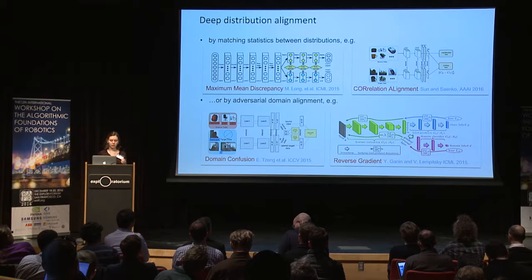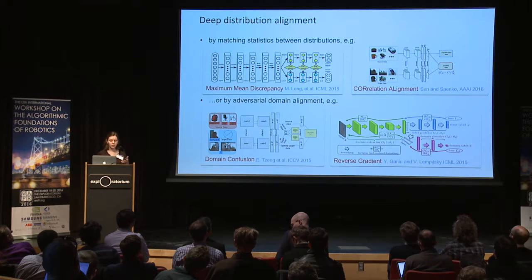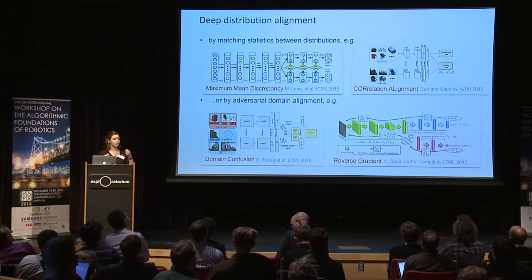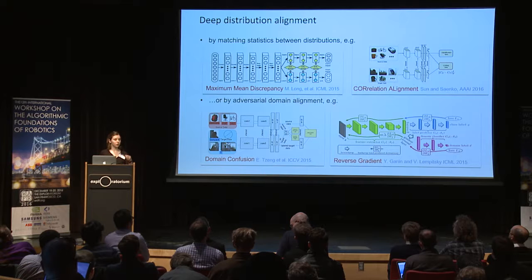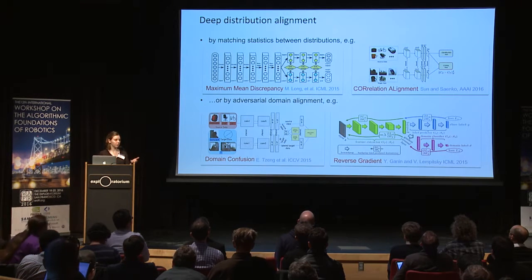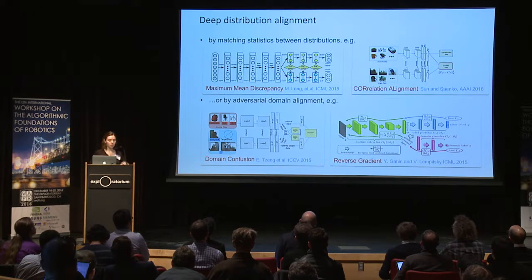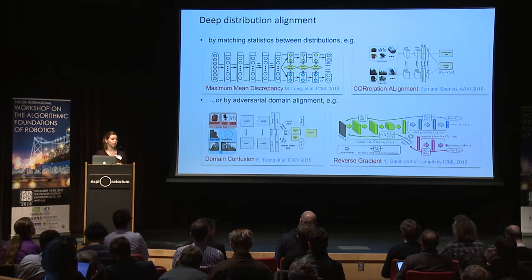There's been a fair amount of work in deep distribution alignment, and we recognize two branches. The first is to match the statistics of the distributions — for example, requiring that the means or second moments be equal. The second is a more adversarial approach, where you learn a representation that cannot be discriminated as belonging to one domain or another. We'll be using the domain confusion method, where we try to fool a discriminator that tries to figure out which domain your image came from.